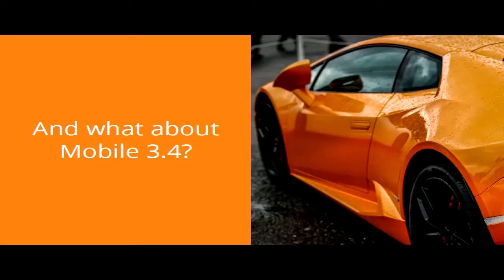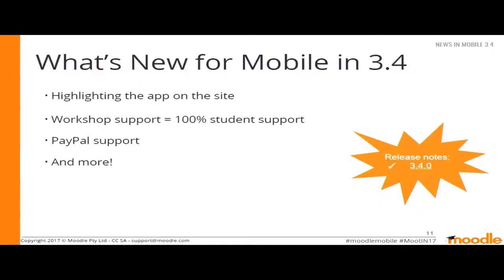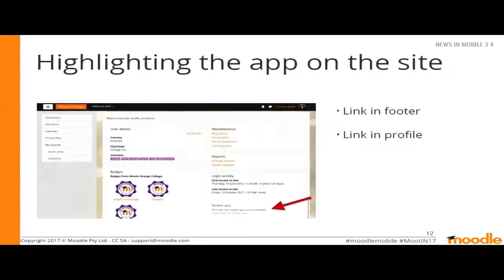What about mobile version 3.4? This version was released at the end of November, so only three weeks ago — it's very young. Let's see the features in more detail. First, this is not in the app but it's related: from the 3.4 version, you can highlight the app from your site. There are some configuration parameters, so if you are an admin you can enable these parameters to show students a link in the footer or in the profile to promote the use of the app.